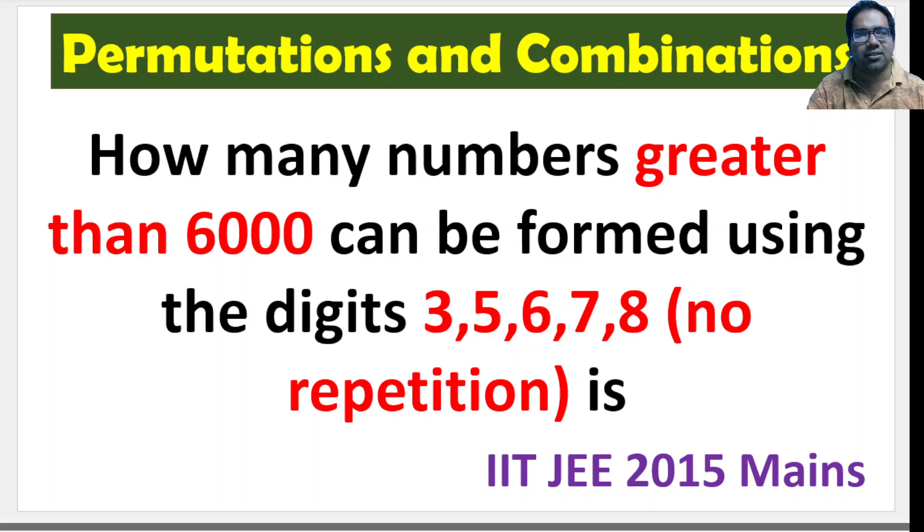So numbers greater than 6000, that means all 5 digit numbers will definitely be greater than 6000, and some of the 4 digit numbers - the ones starting with 6, 7, or 8. Four digit numbers starting with these will also be greater than 6000, right?